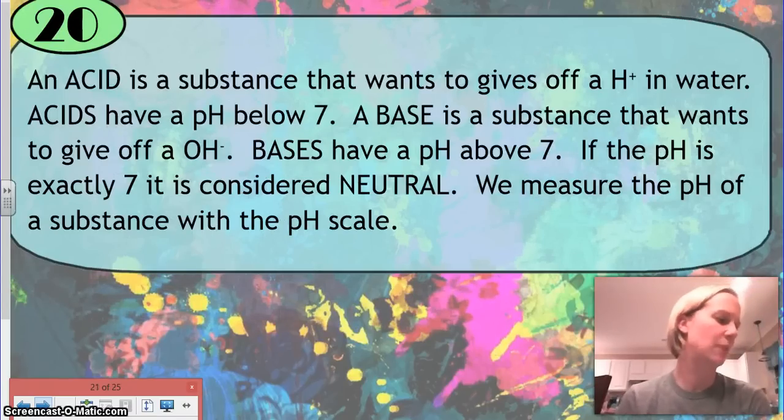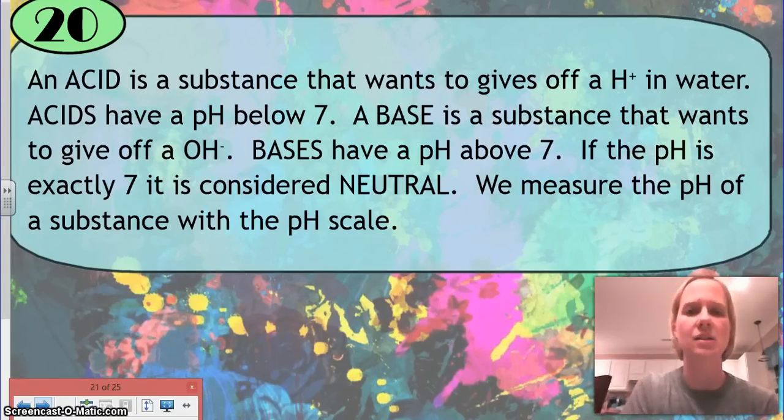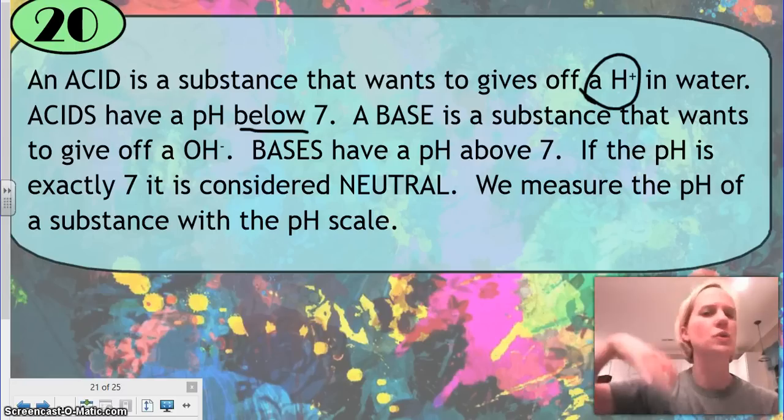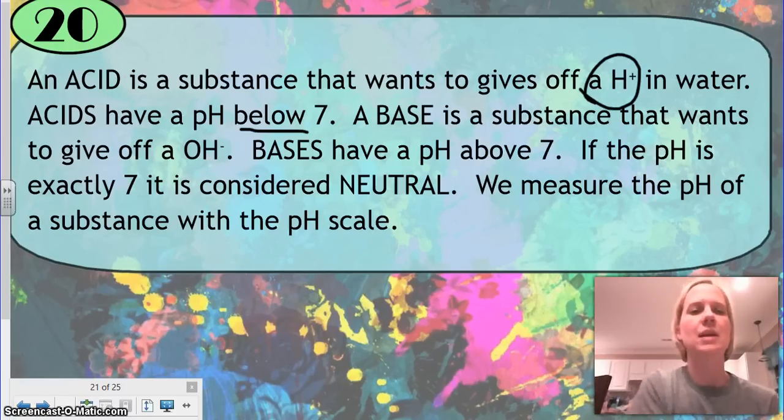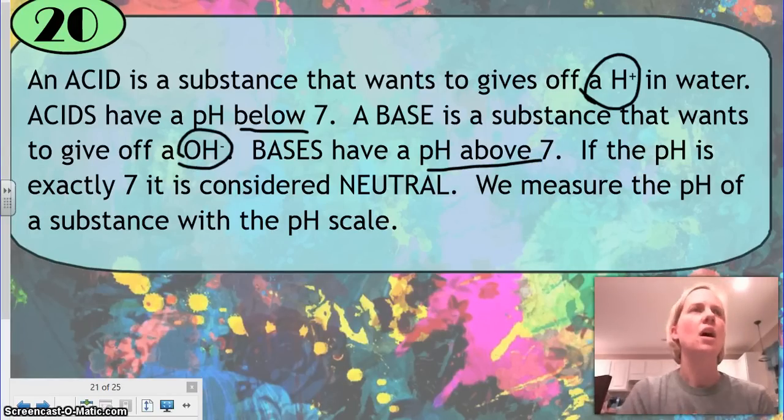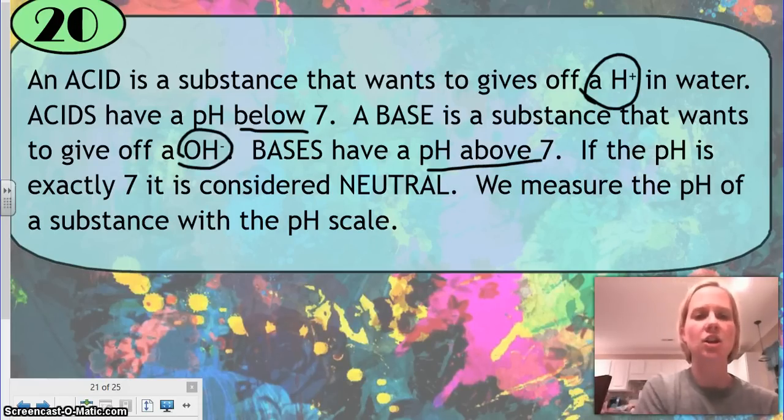The next question is on acids and bases and pH scale and neutral and numbers and all that kind of stuff. We know that an acid wants to give off a hydrogen, and acids are going to be below 7. These are examples of orange juice, lemonade, tomato juice, things like that. A base is a substance that wants to give off an OH, and they have a pH above 7. This is going to be your soaps, ammonia is going to have that effect, things like that. If the pH is exactly on 7, it's considered neutral. That's going to be things like pure water. You'd want your blood to be close to neutral.